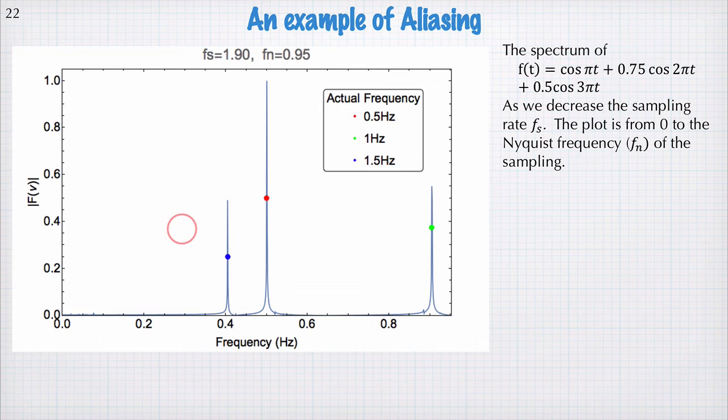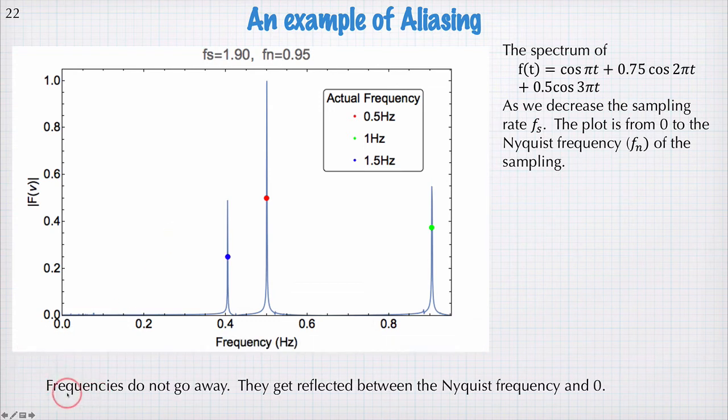This problem is called aliasing and it's a real problem that you've got to address if you want to collect sensible data using digitization systems. So the take-home message here is that frequencies do not go away. If you've got frequencies that exist in your signal that are above the Nyquist frequency and this signal hits your digitizer, then you'll see that as an artifact in your data that does not actually exist.